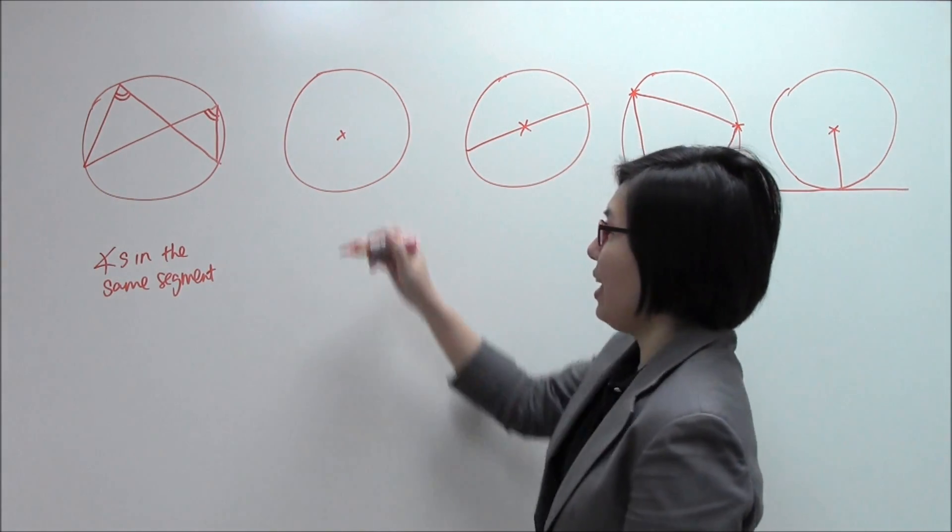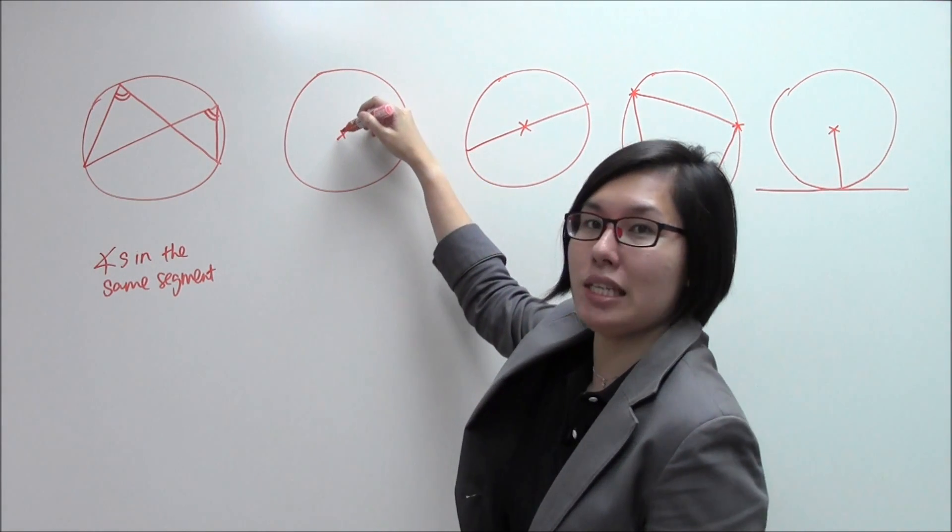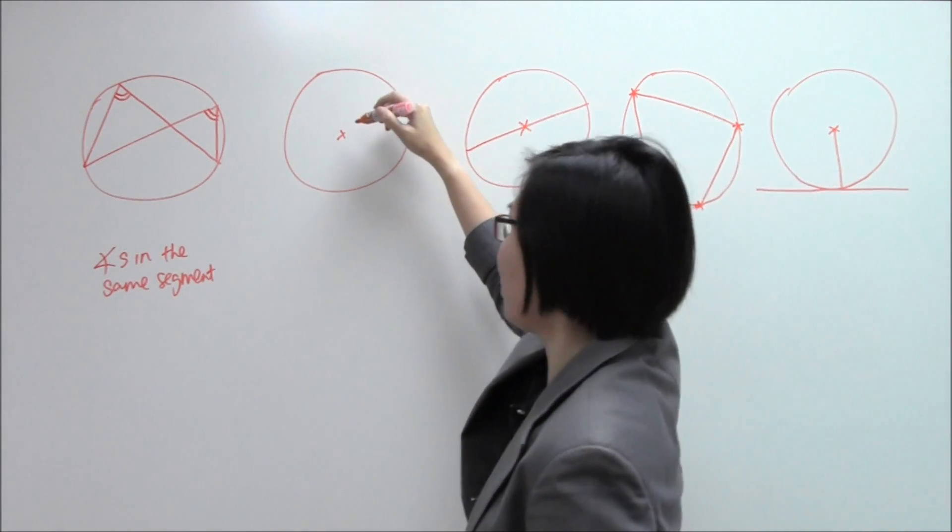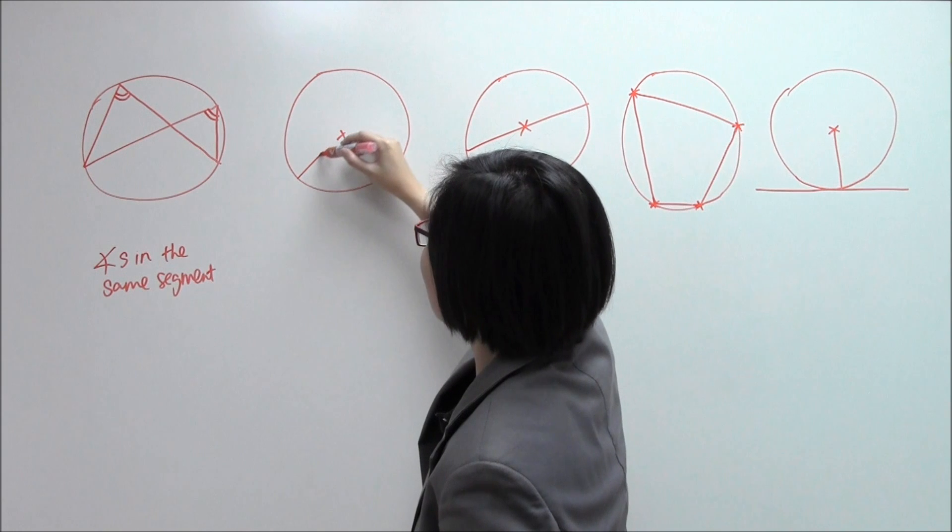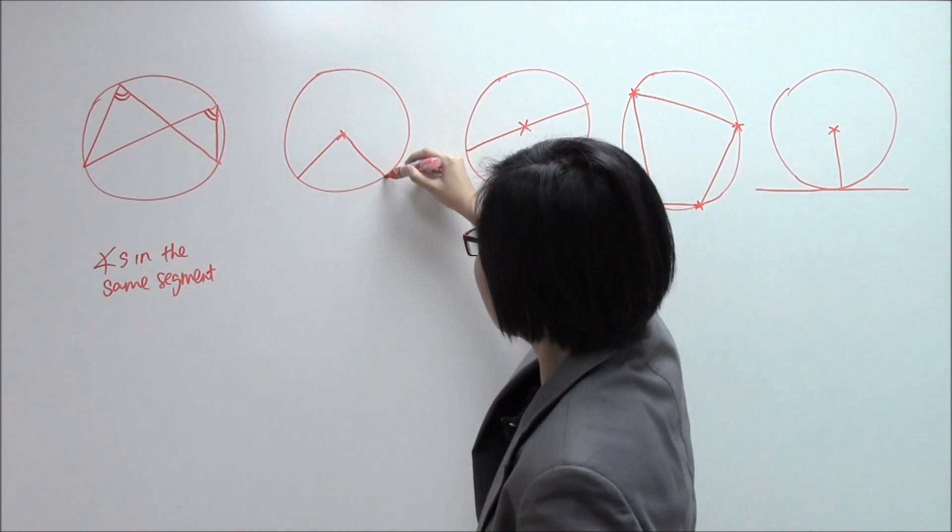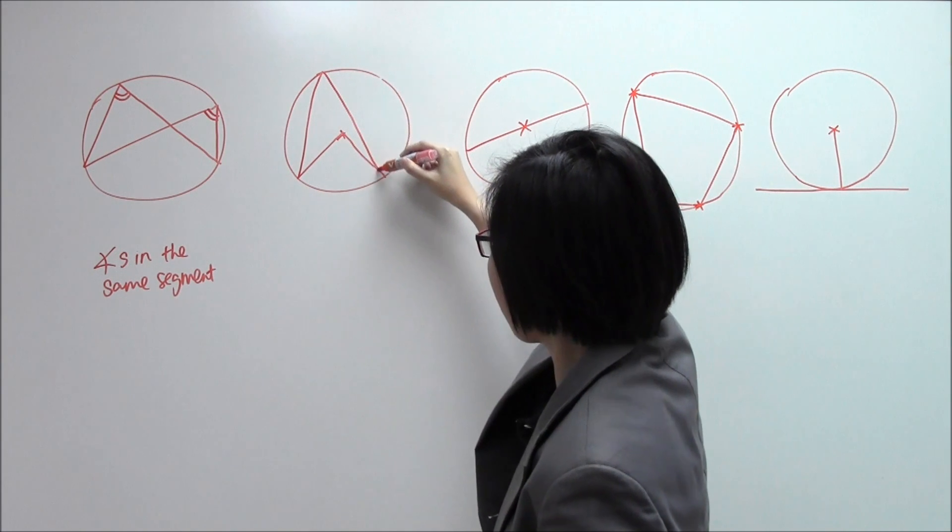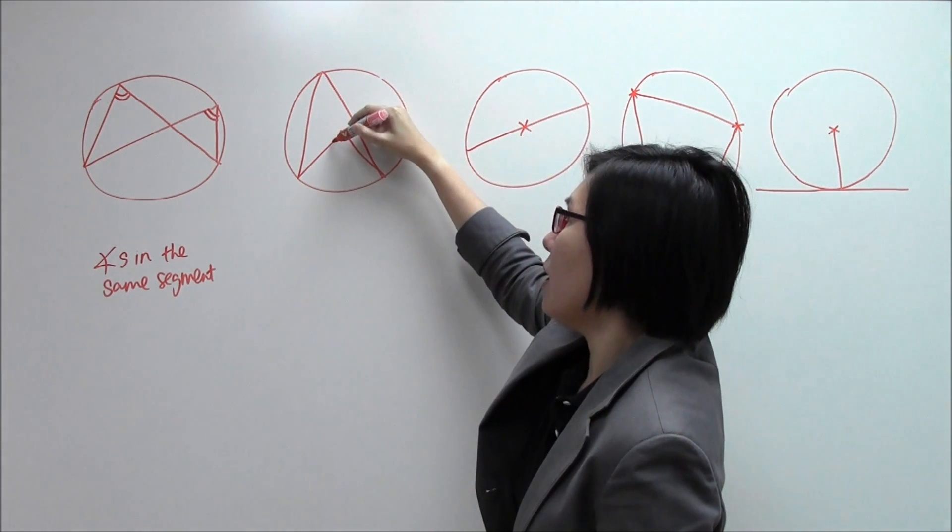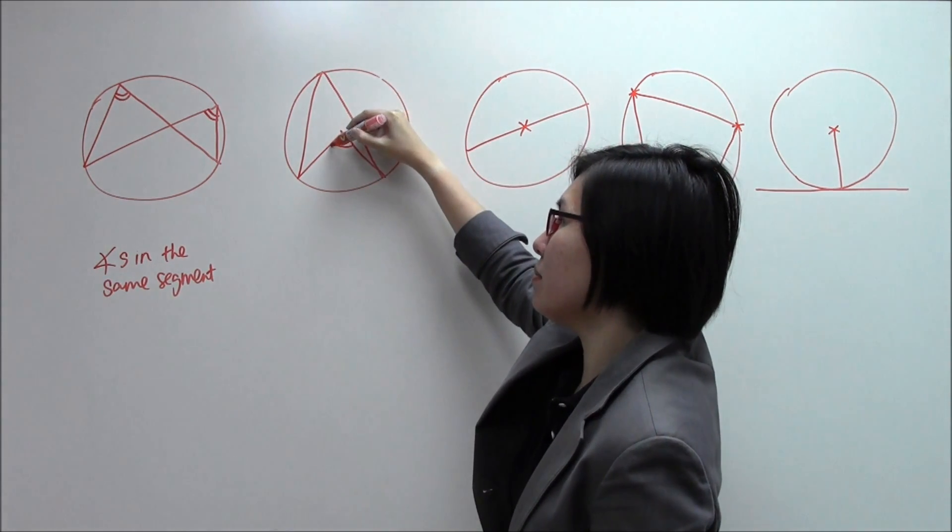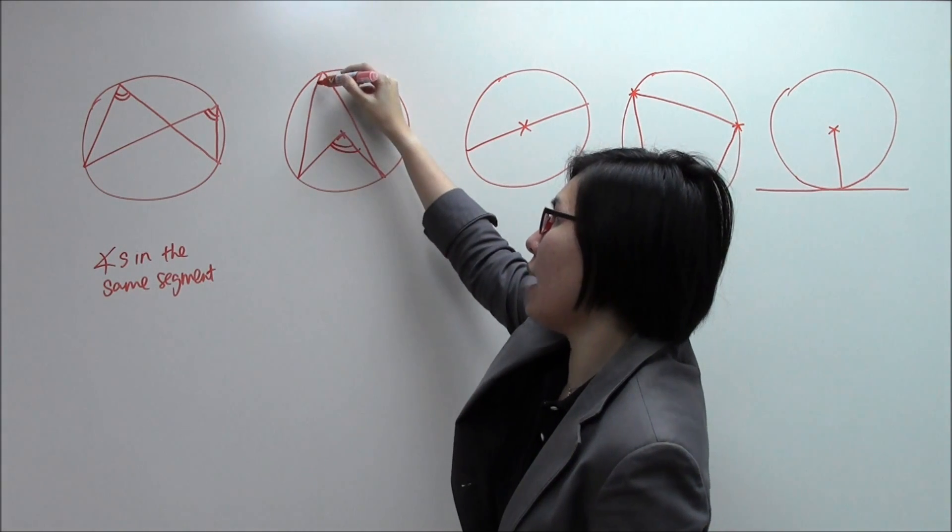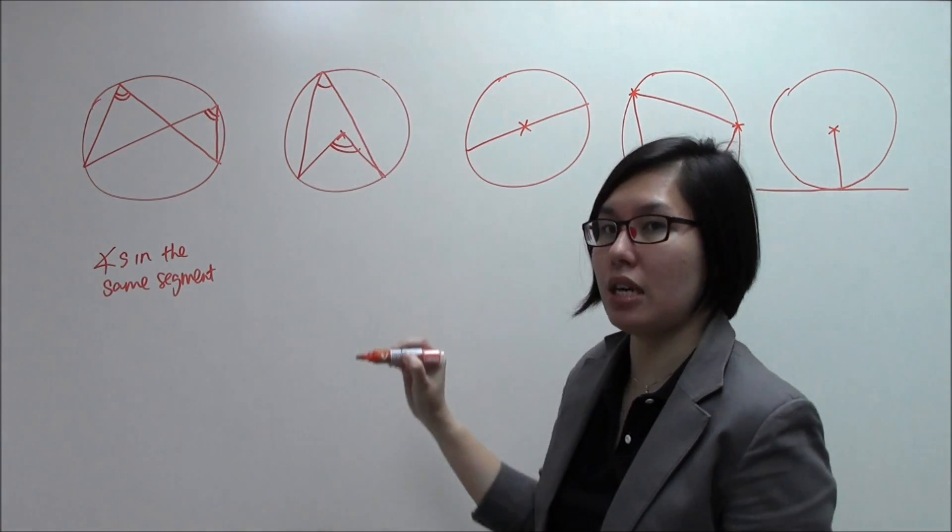Second property. Now, over here you see a cross. It indicates the centre of this circle. So, let me just draw for you to see first. Angle at the centre is 2 times angle at the circumference.